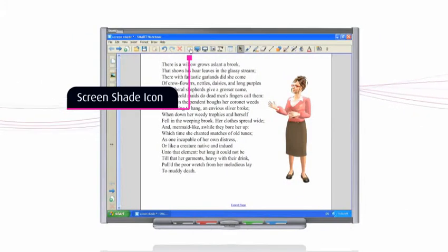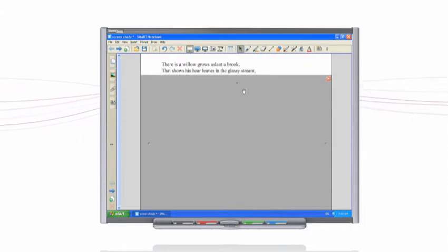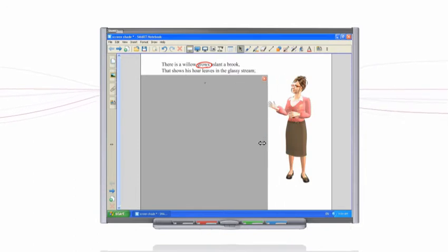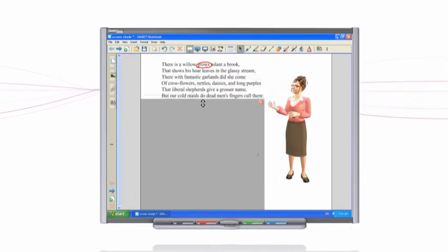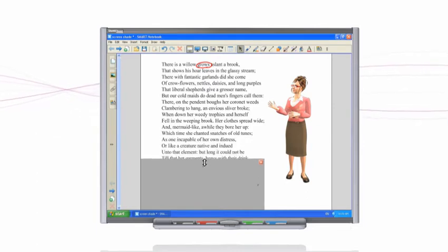Press the screen shade icon on the menu bar. A grey screen covers the page. Press the dimple at the top of the page and drag it down to reveal the text one line or one paragraph at a time, or drag a dimple in from the left or right to reveal a column of text or an image.